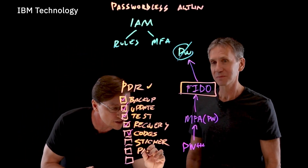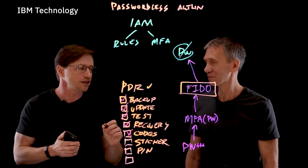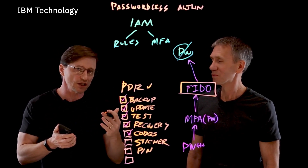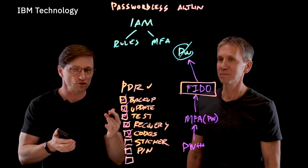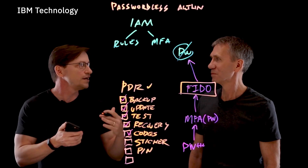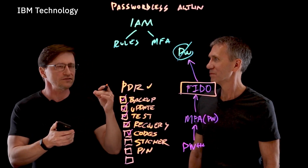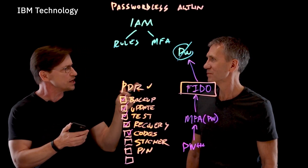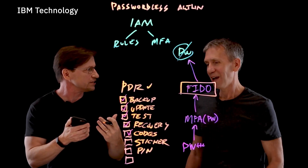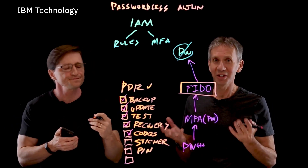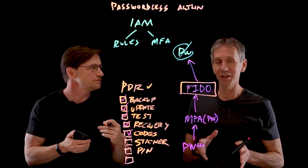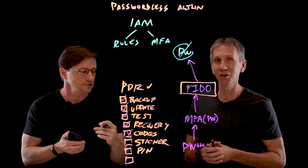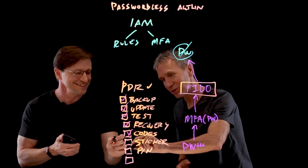Another good idea is on your account with your cell phone provider, you can add an additional layer of security beyond just the password — a PIN number. When you call to change your service, they ask you for that. What do they call it? Account takeover — ATO is the acronym we use in the security space. We want to prevent someone from getting into your account, so this is ATO defense. Did you get that one? I absolutely do that one.